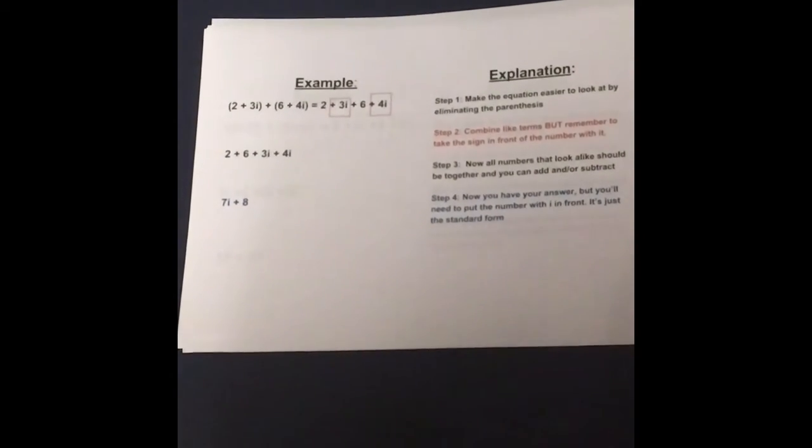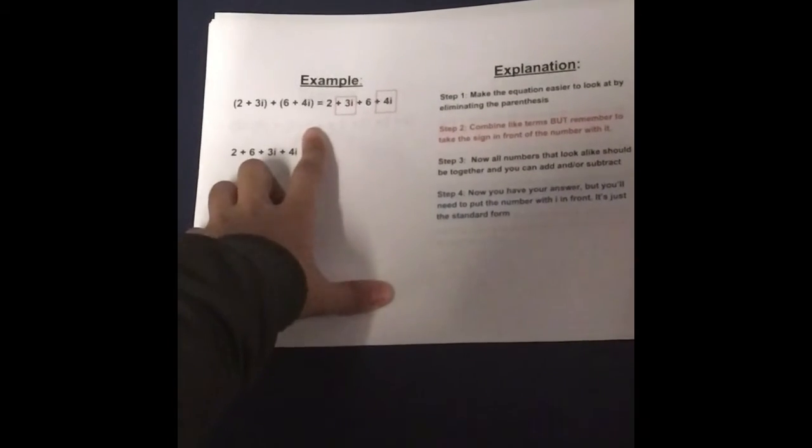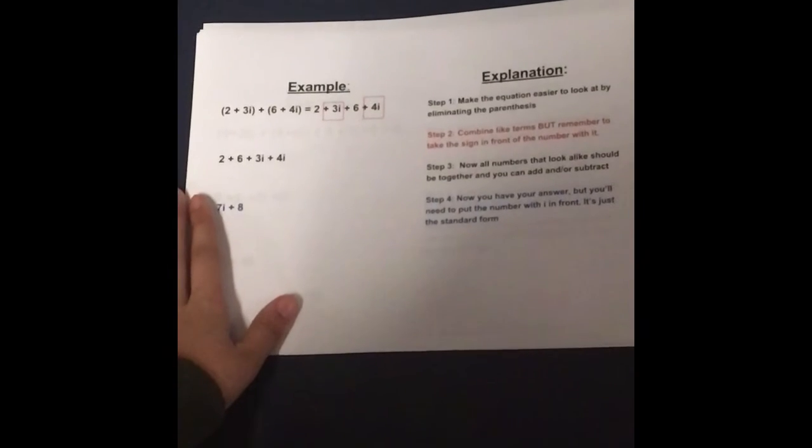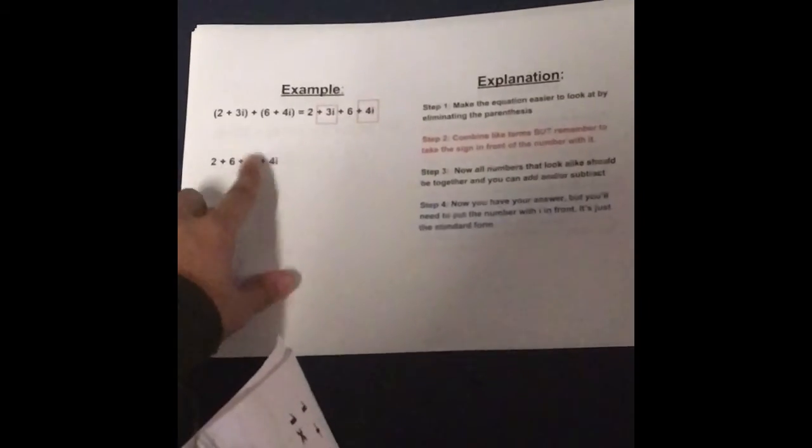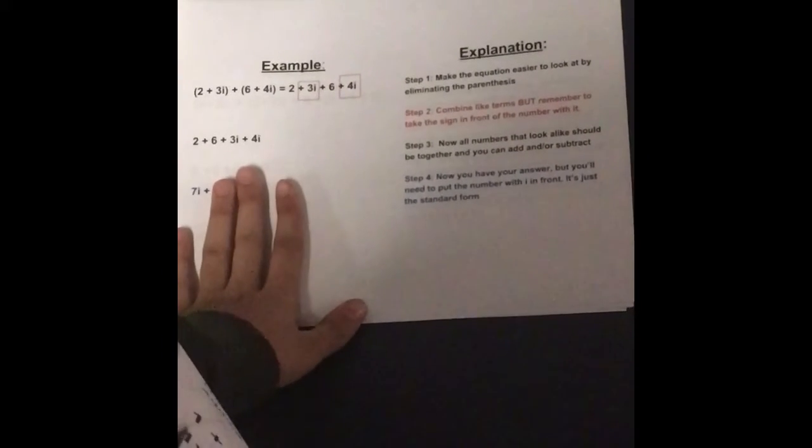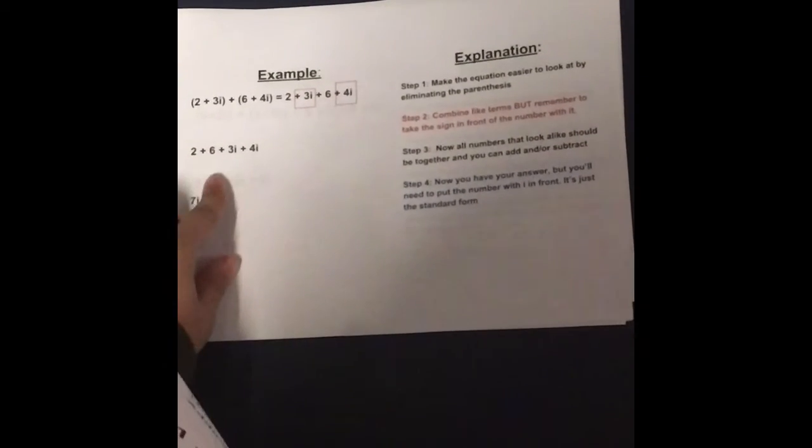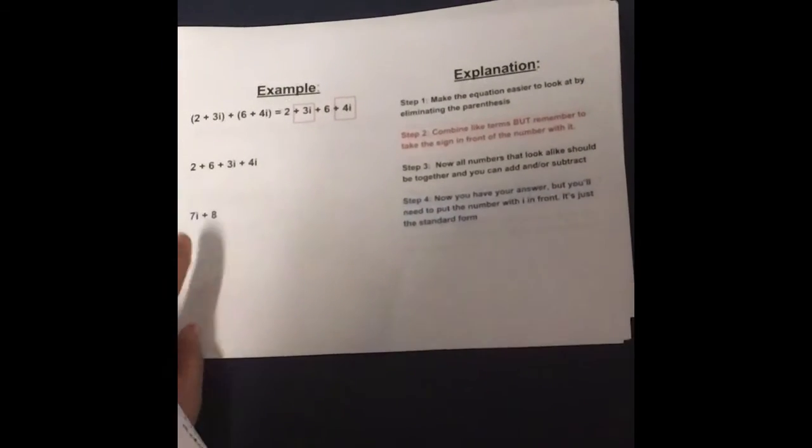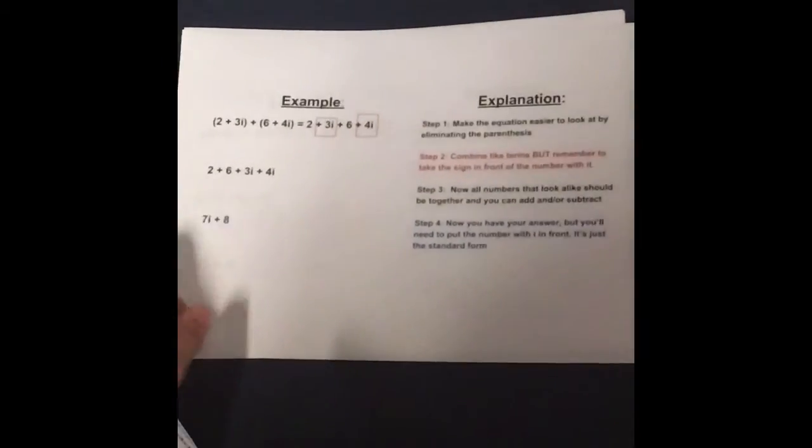Example number two. You do the same as you did with the first example. You sum up your equation. Your like terms are 2 and 6. So you add these two and you get 8.